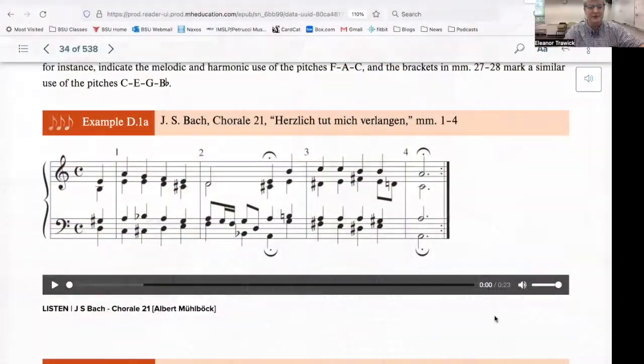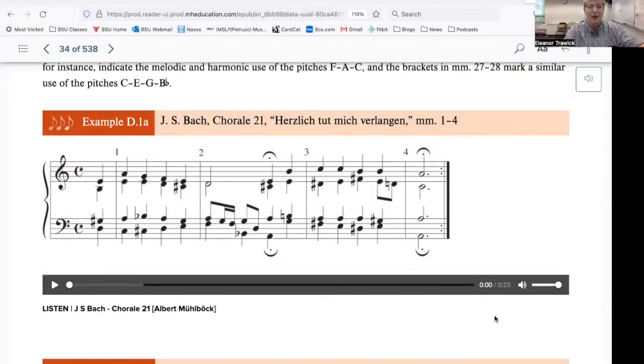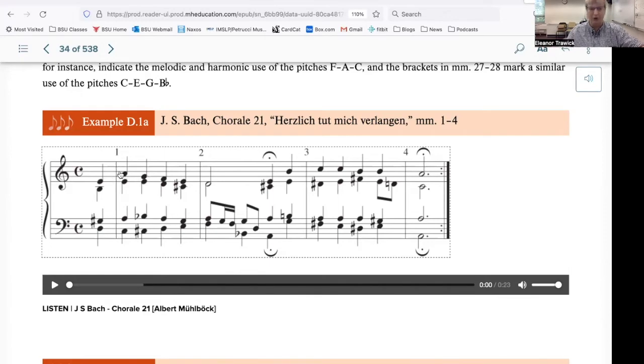To get started, I'm going to share my screen with you and show a picture that's in your textbook in Chapter D. This is example D.1a. This illustrates the idea that there are both horizontal and vertical constructs in music. This is a short chorale harmonization by J.S. Bach. The melody that you see here in the top line is a chorale tune, a German-Lutheran hymn tune.